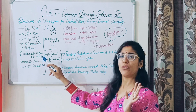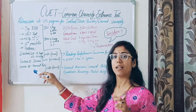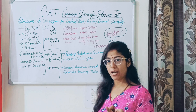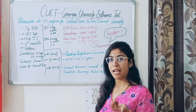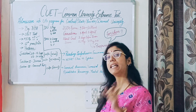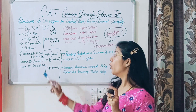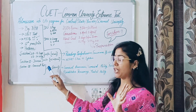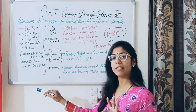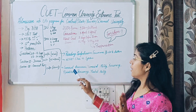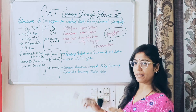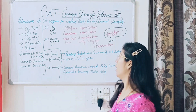Section 1 mein aap koi bhi ek language choose kar sakte ho — English, Hindi, Marathi, kuch bhi. Section 2 domain ka hota hai — jis particular subject ki aap taiyaari kar rahe ho, jis college mein admission chahiye, jaise engineering college ya art college. Woh aapka main subject hota hai. Section 3 aapka general test hota hai, jisme general awareness, mental ability, reasoning, quantitative reasoning — yeh sab aata hai.